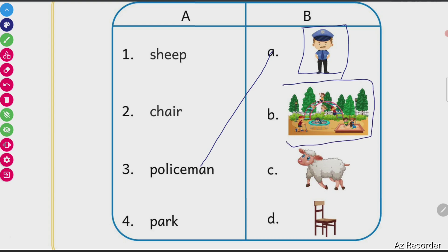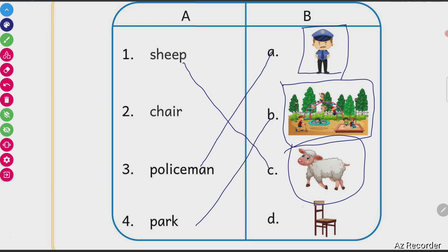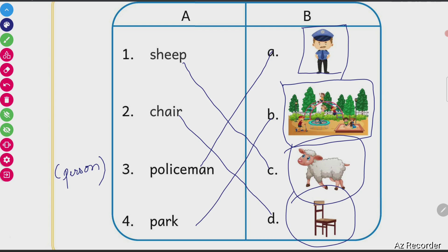This place is commonly known as where kids play, where there are a lot of trees. Kids are playing. That place is known as park. This animal is commonly known as a sheep. And this furniture is known as chair — a furniture in which we sit. So this policeman is a common name for a person.